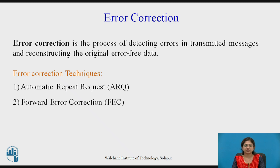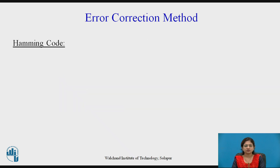In Forward Error Correction, a code such as Hamming code is used, where software is set to both detect and correct the error. Here we will see Forward Error Correction technique, that is Hamming code. This is all about the error correction technique.